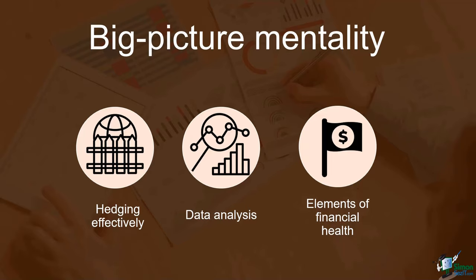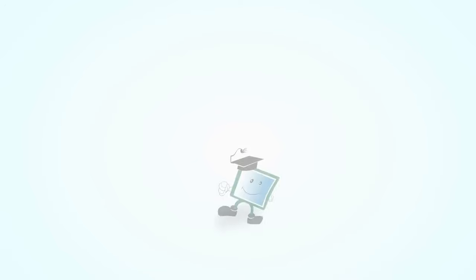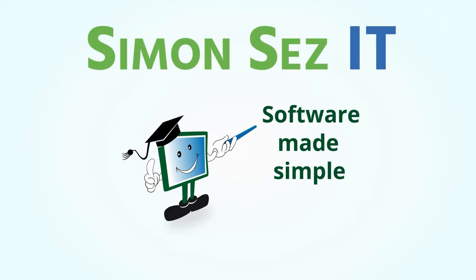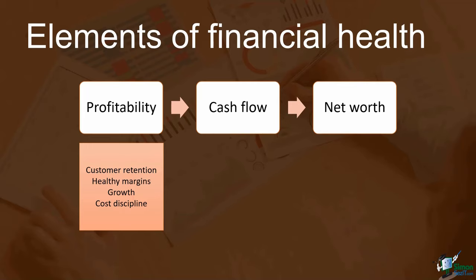There are three elements of financial health: profitability, cash flow, and net worth of the business. To gauge profitability, we have to understand the following aspects. The ultimate test of the business is whether it can consistently and predictably get and keep customers. Having healthy margins is about selling at a price which provides value to the customers and healthy margins for you. Growth is about scaling the business up and getting even more customers. Cost discipline is about keeping the expenses in check so that you bring a solid percentage to the bottom line.